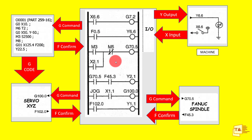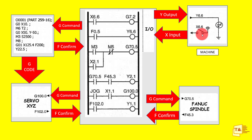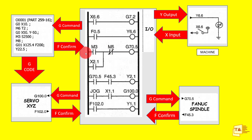This is the basic layout of execution of PMC. We have a PMC ladder here, and this is a CNC program. This one is servo and spindle, and this one is the machine — machine is nothing but X input. We are taking input from the machine and giving output to the machine. G commands and F commands are related to CNC functions.